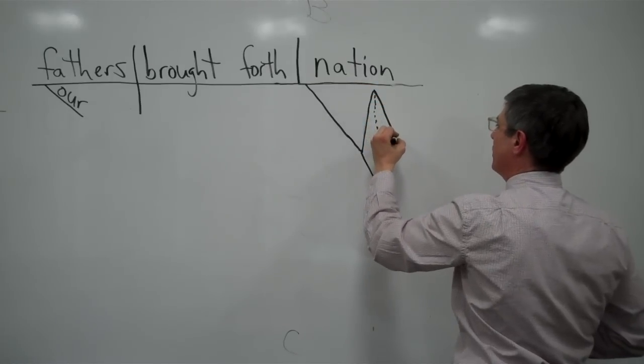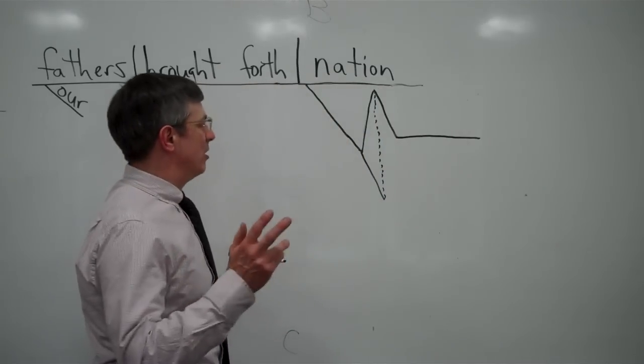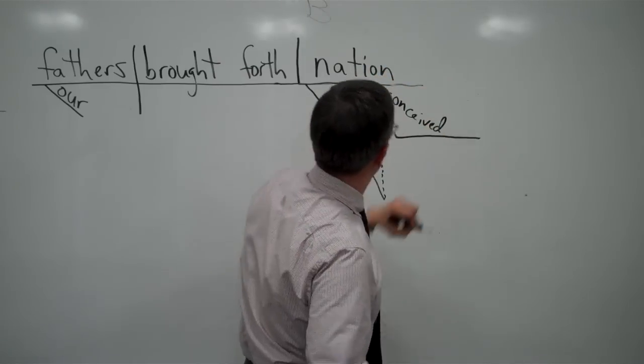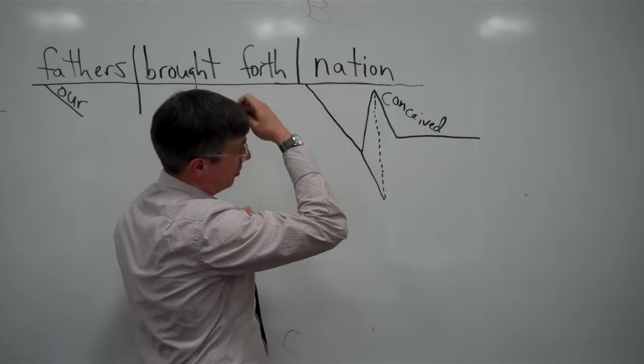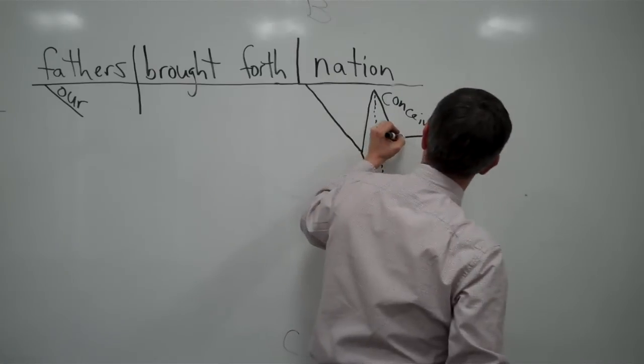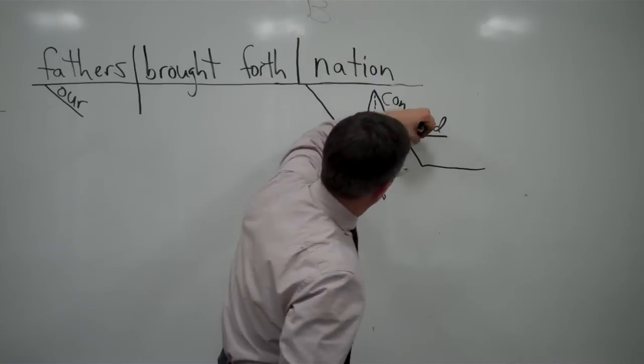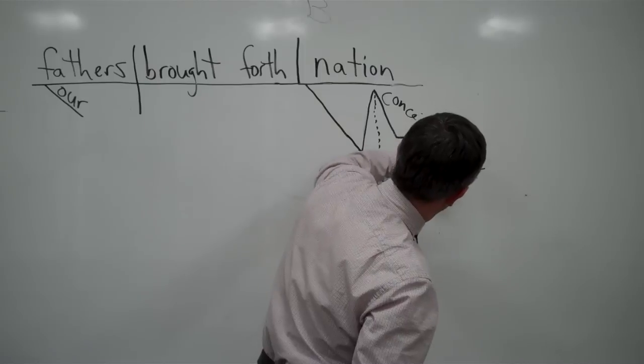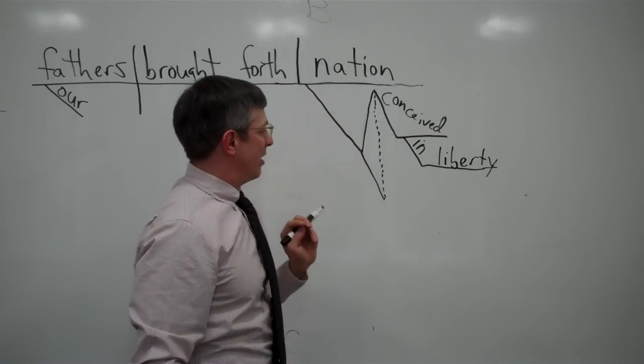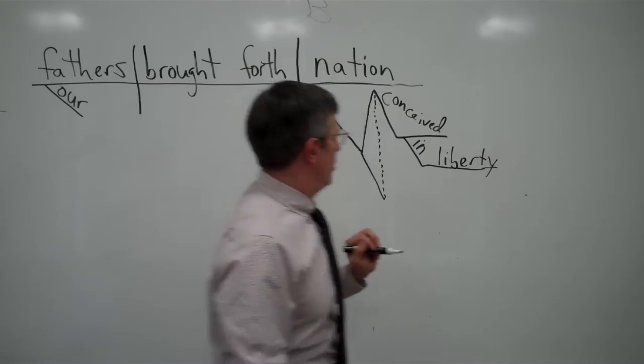You'll see why I'm drawing a dotted line there in a minute. Now I'm going to descend there. Because now what I have is a participle. Conceived in liberty. So that's our first participial phrase. And I'll put conceived here. And that's how we note that something is a participle. Conceived how? We have a prepositional phrase dangling from conceived. How is it conceived? In liberty. That's how. So here we have a prepositional phrase modifying conceived and functioning adverbially. So that's one of our participial phrases.